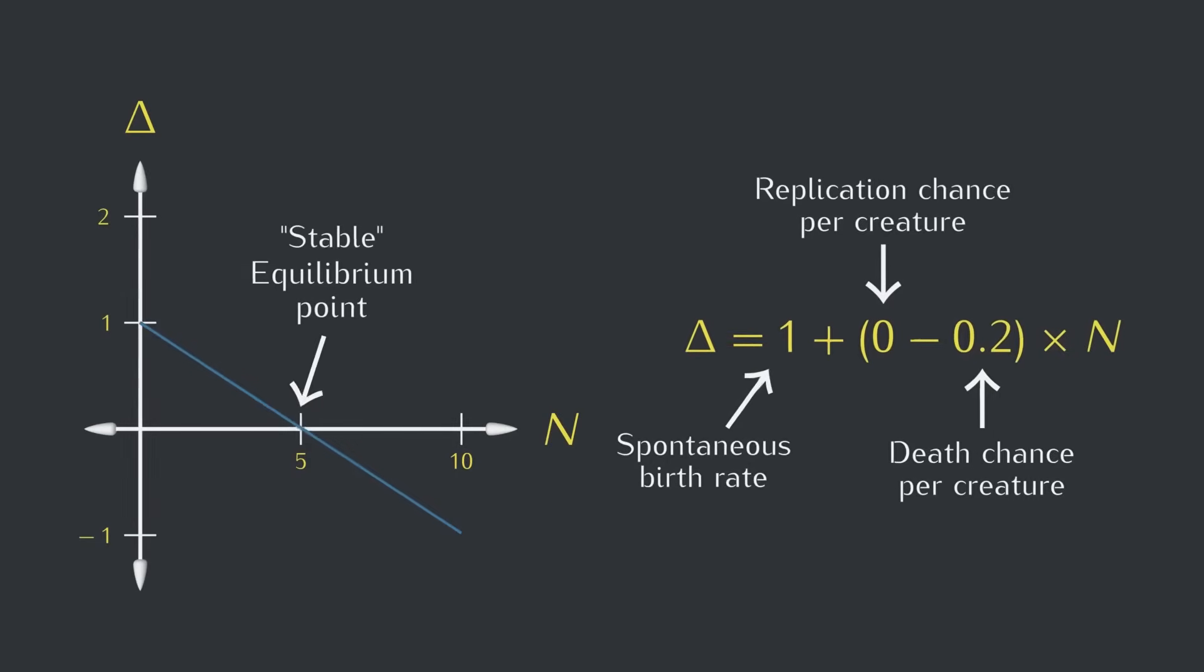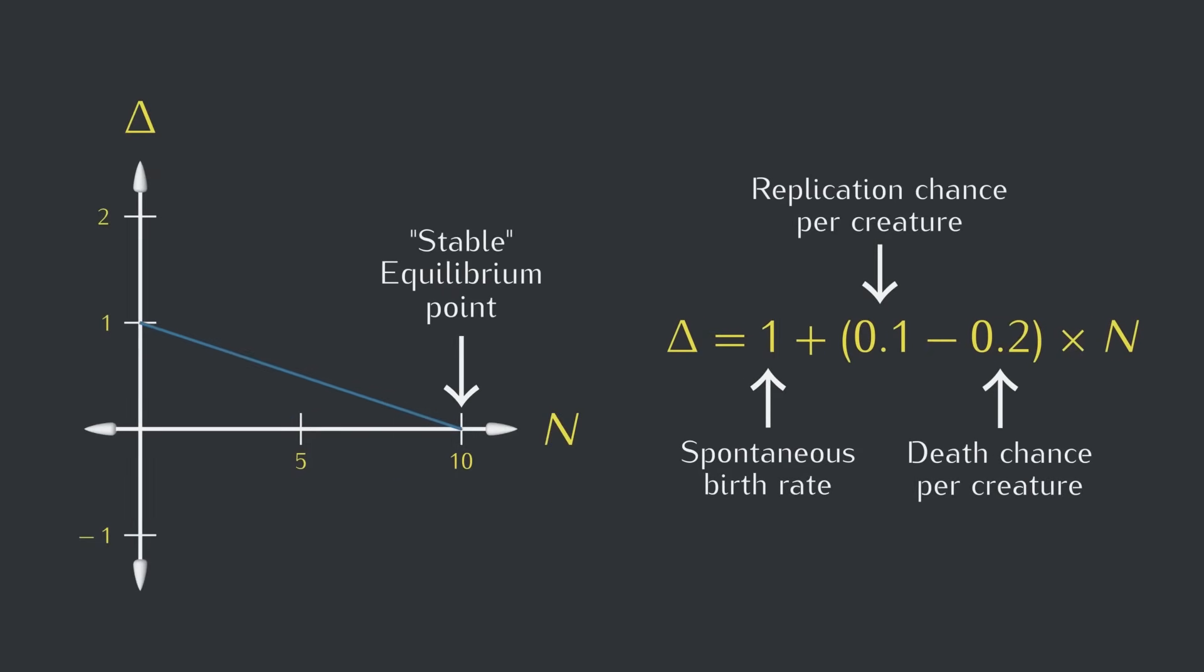Now, what happens if we add a replication chance? The slope of the line changes, and so does the equilibrium point. Overall though, things are pretty much the same. Things get interesting when the replication chance is the same as the death chance. In this case, we get a flat line and the equilibrium disappears.